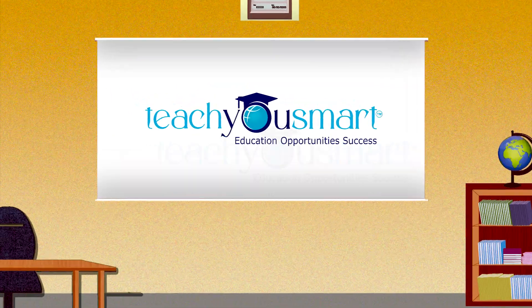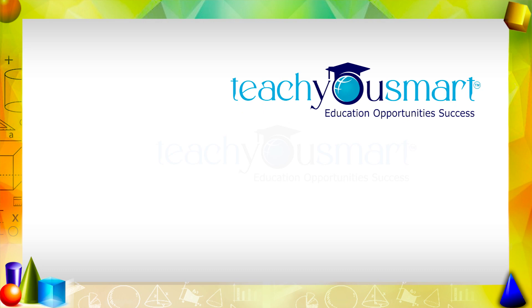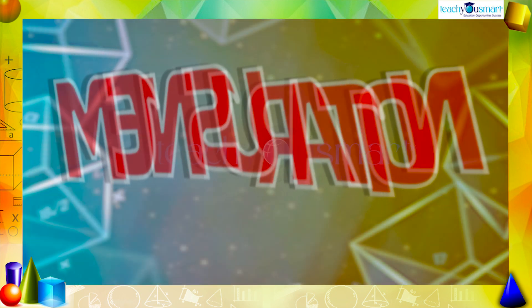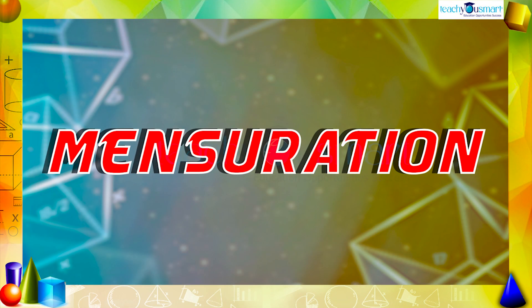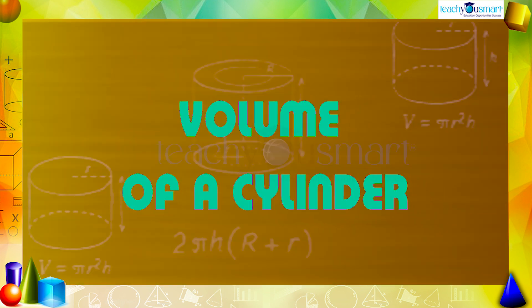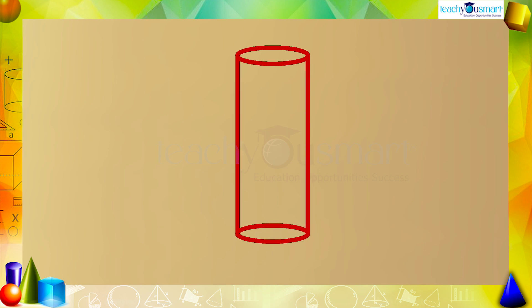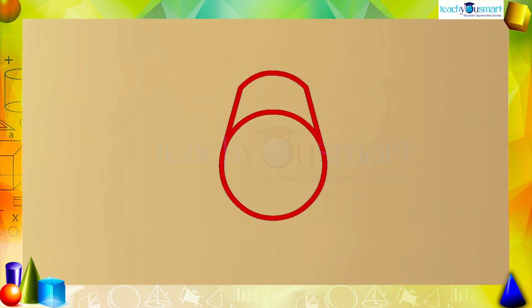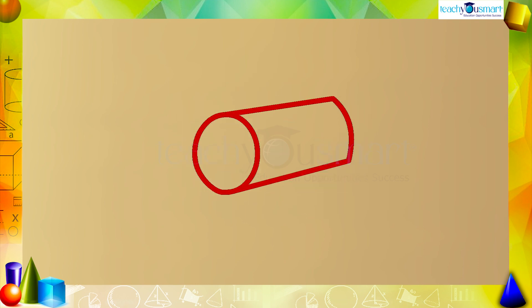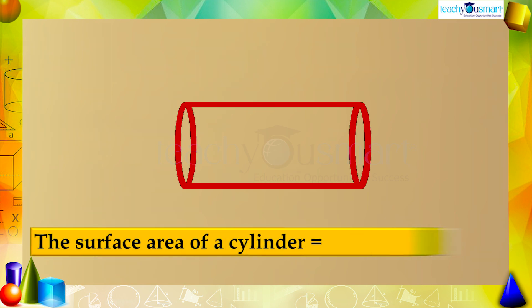Hello students, welcome to Teach You Smart. Let's continue our journey through mensuration. Today we will be discussing the volume of a cylinder. A cylinder is a solid shape having one curved surface and two identical circles on both ends. In the previous video we have seen how to calculate the surface area of a cylinder. The surface area of a cylinder is 2πr multiplied by (r + h).